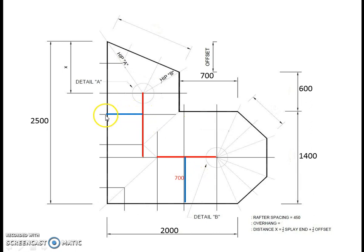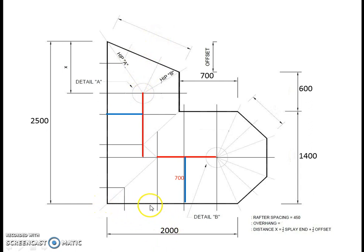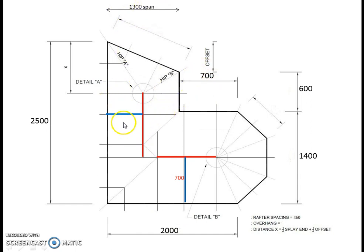We've also got a common rafter marked here in our minor section of roof. We need the span across here to get the run of this rafter, and you'll notice it's not marked on the plan so we need to do a little bit of maths. We have a length of 2 metres from corner to corner, and a measurement from that corner of 700. So 2 metres minus 700 gives us a span of 1300, which divided by 2 gives us a run of 650.